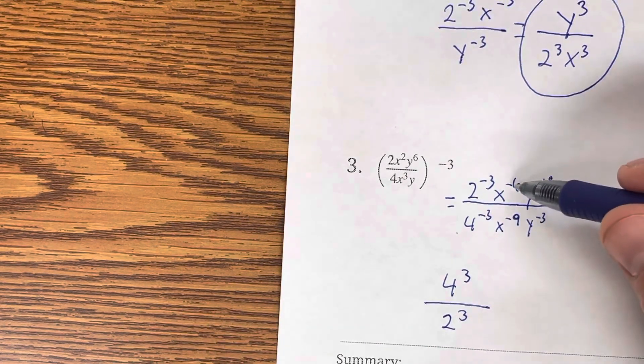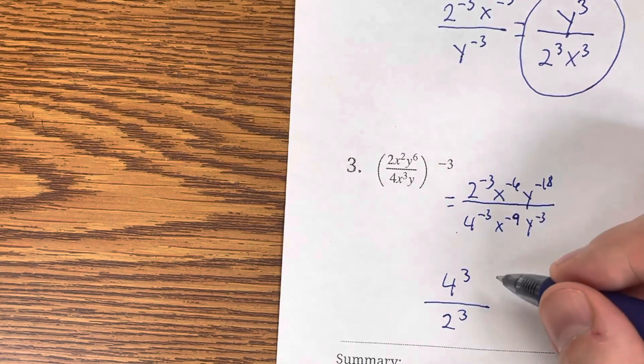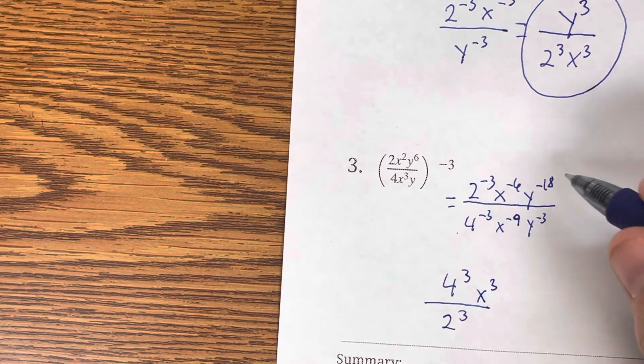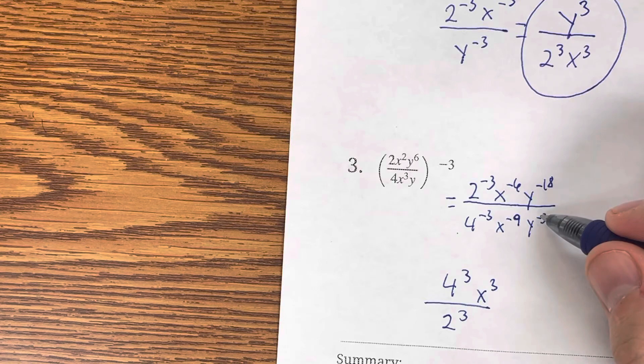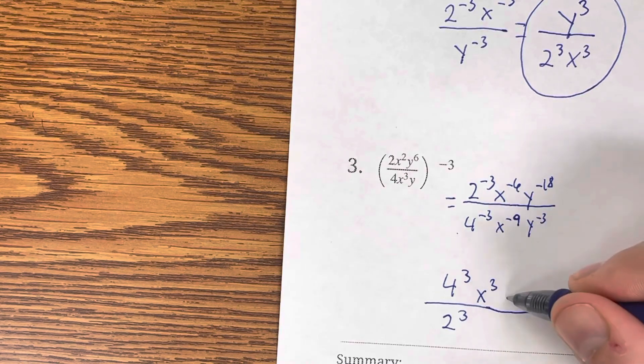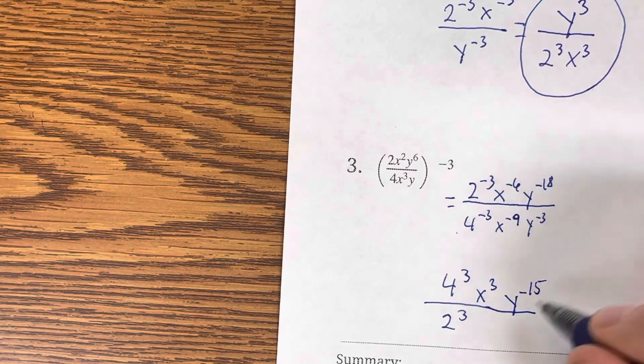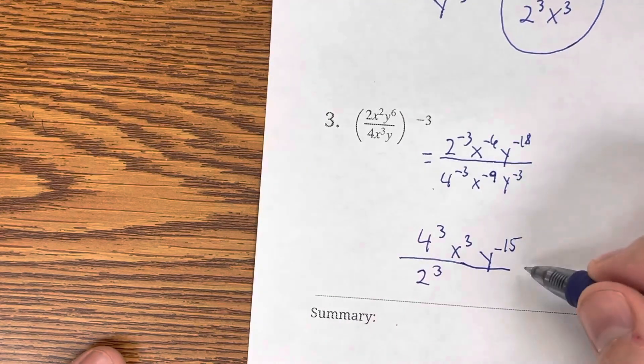So, negative 6 minus negative 9 turns to a positive 3. So, that's x to the 3rd on top. Negative 18 minus negative 3 is negative 15. I can't leave that negative 15 upstairs. It's going to have to go down to the basement.